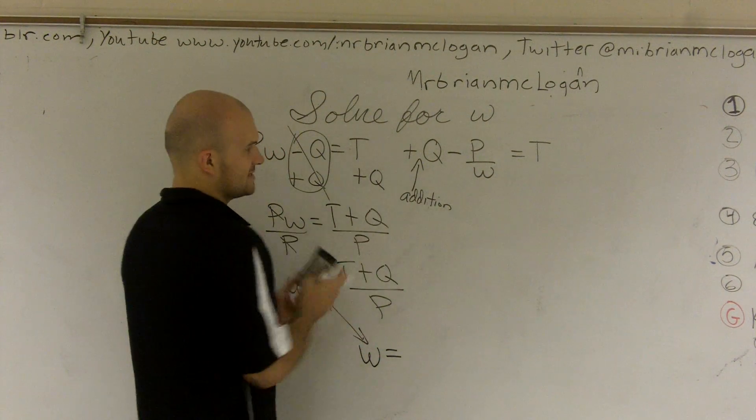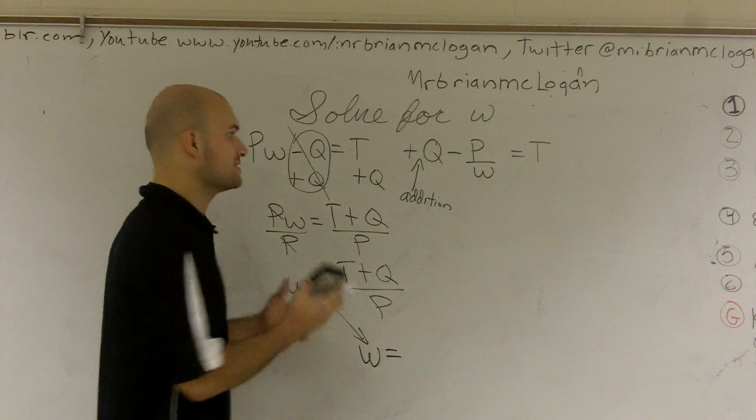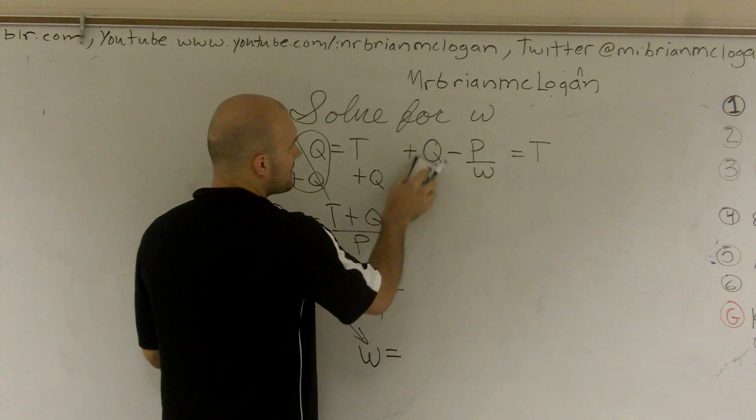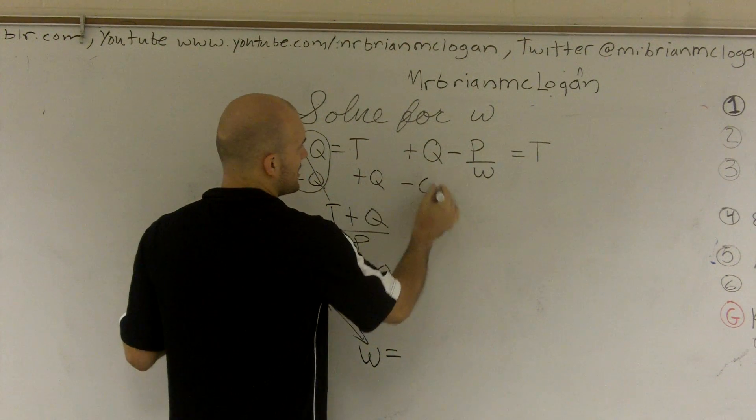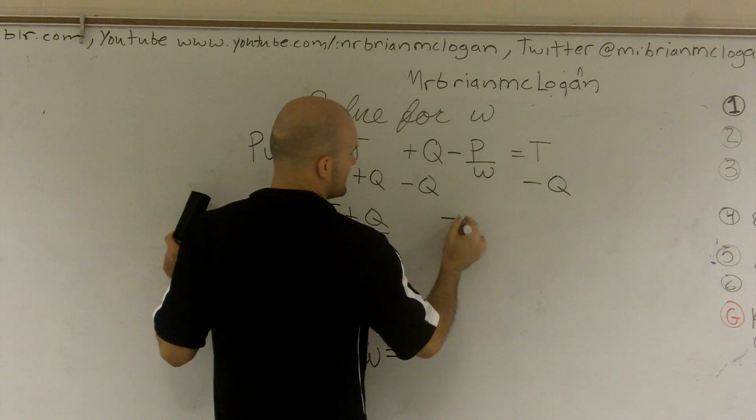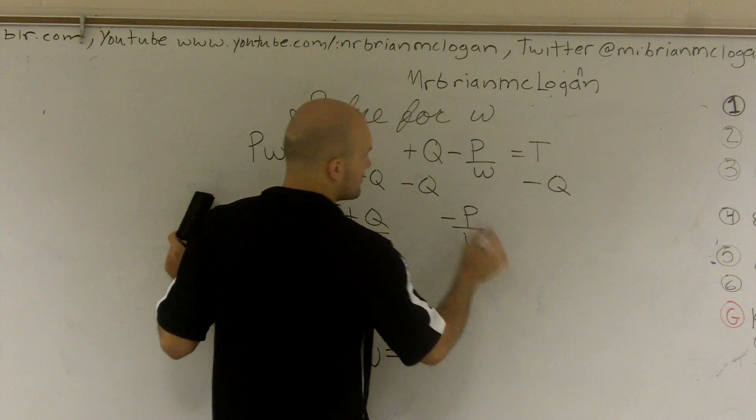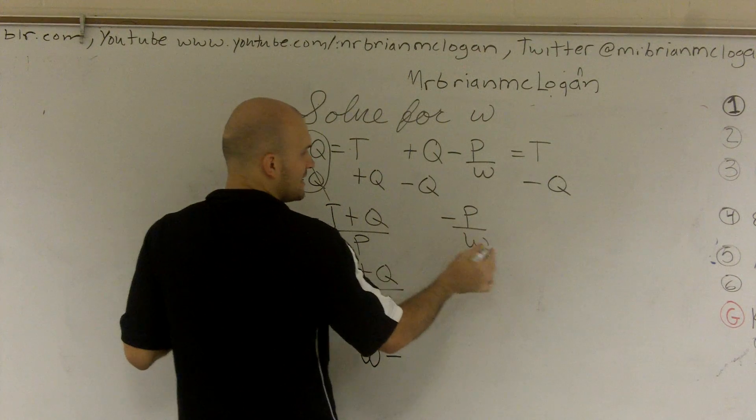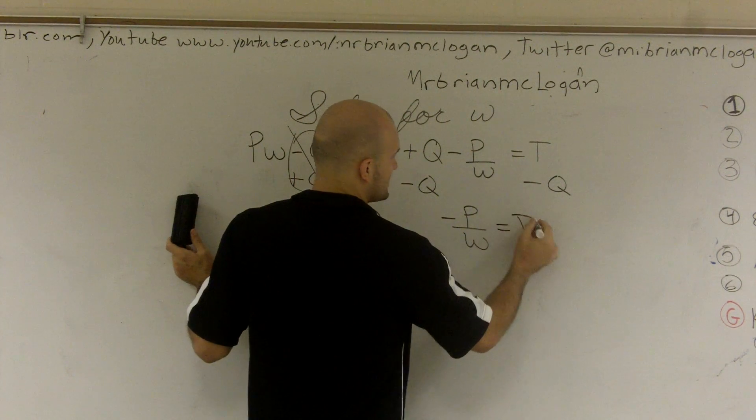Alright. So over here, we have this addition that's starting off, right? We want to get rid of addition first. So to do that, I'm going to have to subtract by q. So therefore, I have a negative p over w. Remember, this is a negative. So you've got to keep that negative sign there. Equals t minus q.